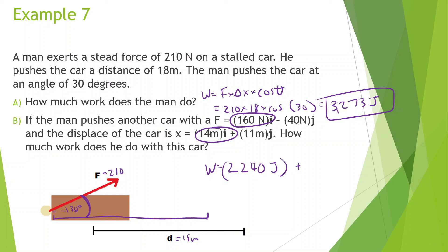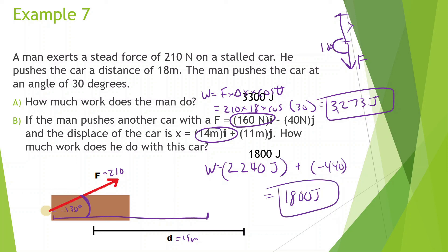For the y-direction, the force is negative 40 newtons downward but the displacement is 11 meters upward, so the angle is 180 degrees. Work in y equals 40 times 11 with cosine of 180, giving negative 440 joules. Total work is 2,240 minus 440 equals 1,800 joules. Note that work and energy are scalars — they shouldn't have x or y direction labels.